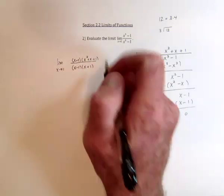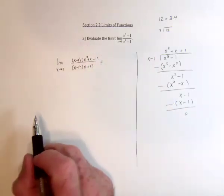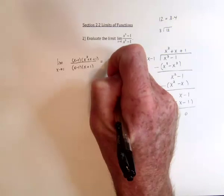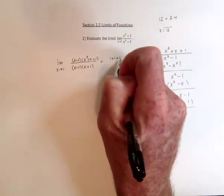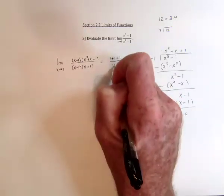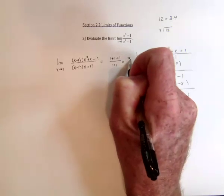So after that, we can try again, substitute in the number 1. And it's going to be a 1 plus a 1 plus a 1 for the numerator, and 1 plus 1. So it's 3 over 2.